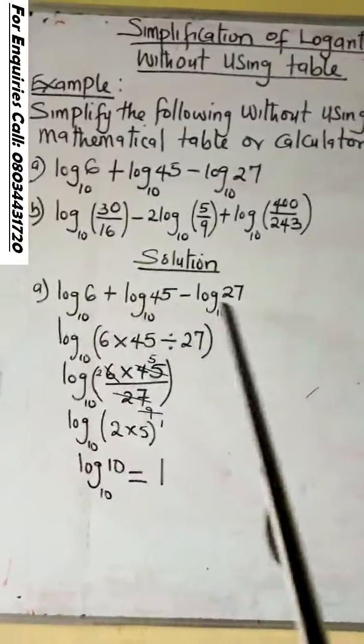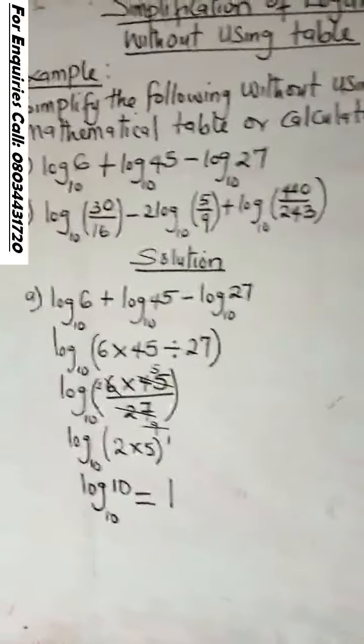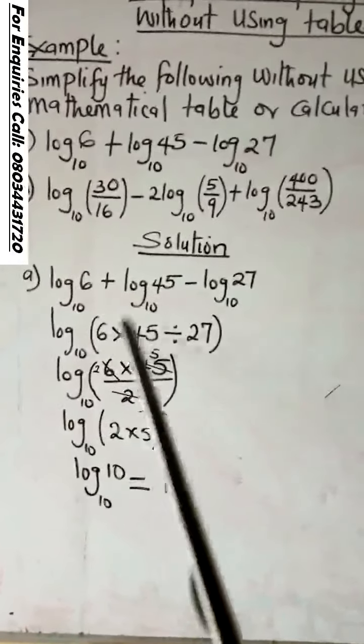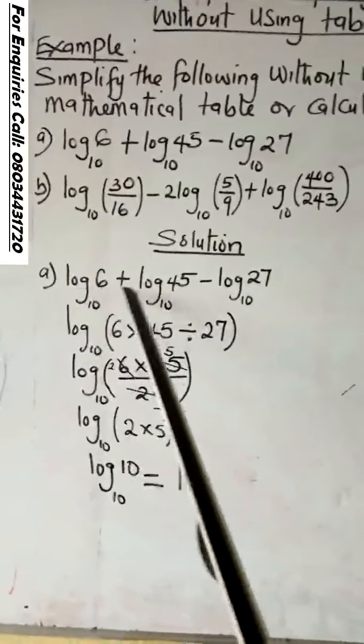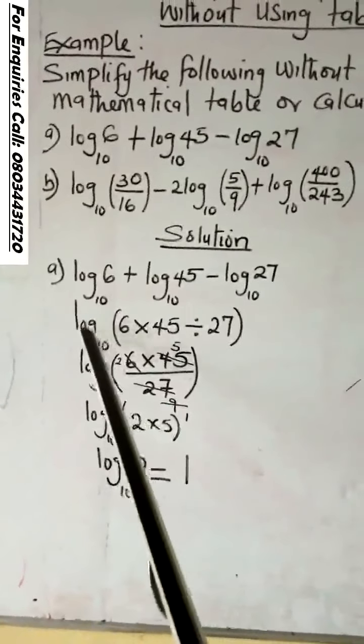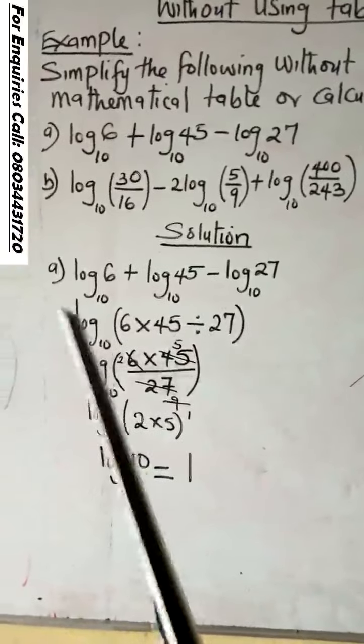What you do is relate the sign with the appropriate conversion. The plus here will turn to times. The minus here will turn to division. Since all of them are on the same base, you pick one log: 6 times 45 divided by 27 base 10.